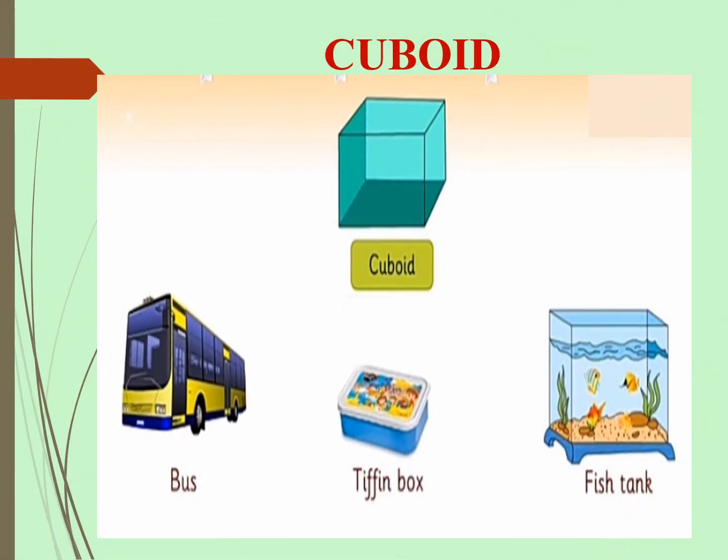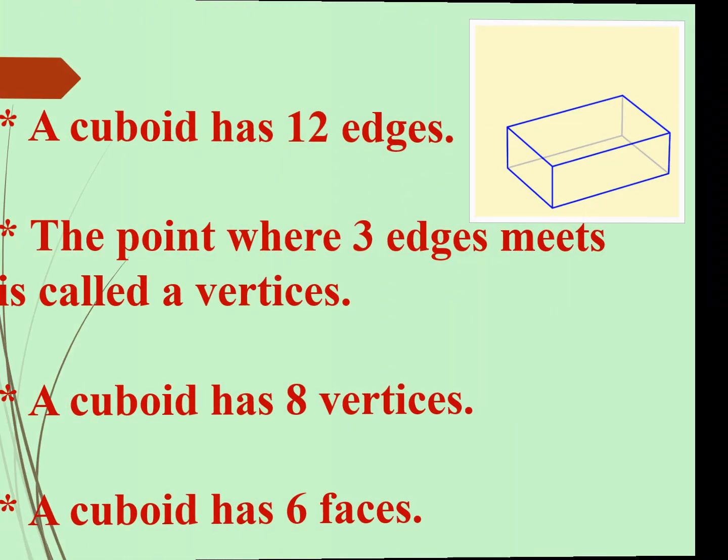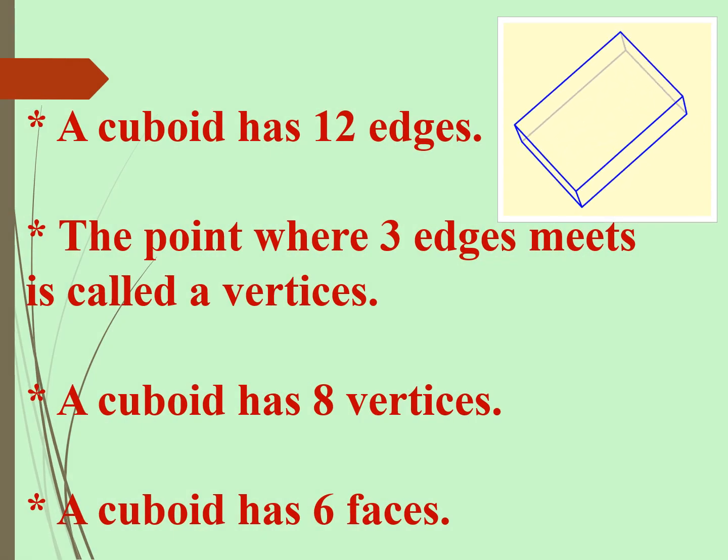Cuboid. These are examples of cuboid: bus, tiffin box, fish tank. A cuboid has 12 edges. The point where three edges meet is called a vertex. A cuboid has 8 vertices. A cuboid has 6 faces.